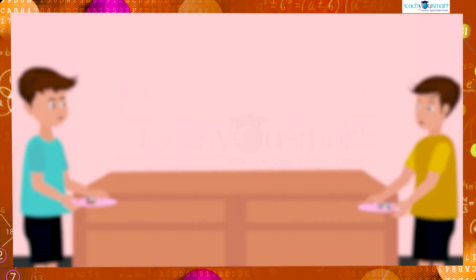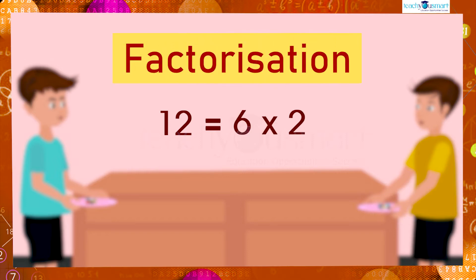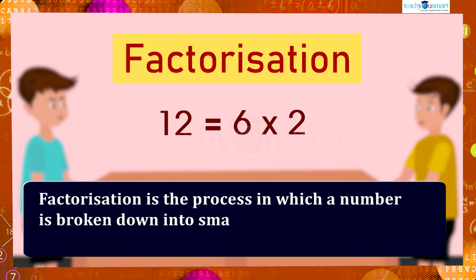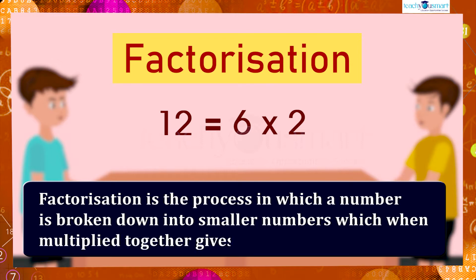That is, here we break the larger number 12 as the product of two smaller numbers 6 and 2. This process is called factorization. Here 6 and 2 are the factors of 12. So factorization is the process in which a number is broken down into smaller numbers which when multiplied together gives the original number.